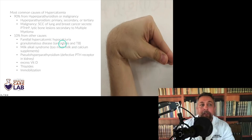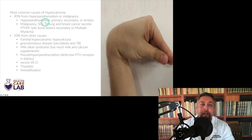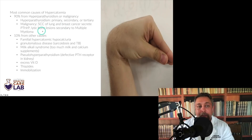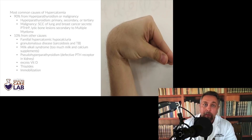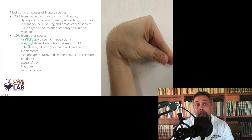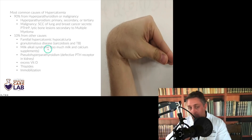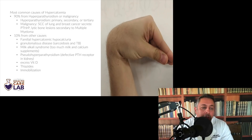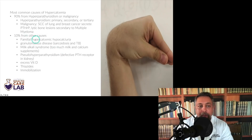Here's Trousseau's again with carpal-pedal spasm. The most common causes of hypercalcemia: 90% are from either hyperparathyroidism or malignancy. Hyperparathyroidism is divided into primary, secondary, and tertiary. Malignancies such as squamous cell cancer of the lung can secrete parathyroid-related peptide — a paraneoplastic syndrome. Lytic bone lesions from multiple myeloma also cause hypercalcemia. The remaining 10% includes familial hypocalciuric hypercalcemia, granulomatous diseases like sarcoid and TB, milk-alkali syndrome, pseudohyperparathyroidism (defective PTH receptor in the kidney), excess vitamin D, thiazide diuretics, and immobilization.